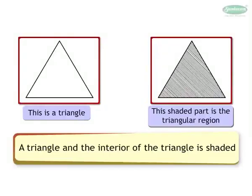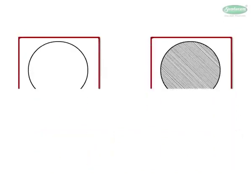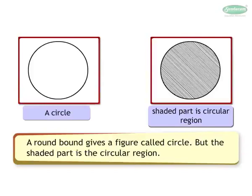We see a triangle and the interior of the triangle is shaded, which comprises the triangular region. Similarly, a round boundary gives a figure called a circle, but the shaded part is the circular region.